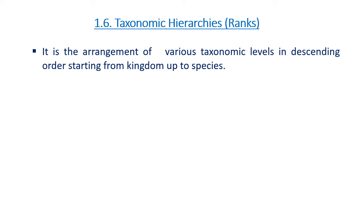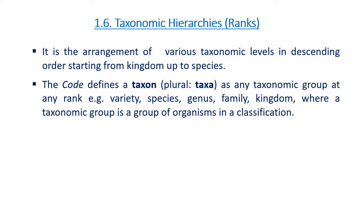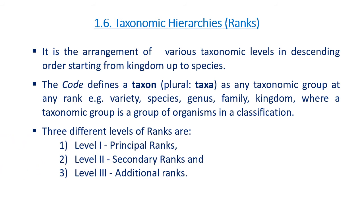Now the taxonomic hierarchies or taxonomic ranks used in classification systems. It is the arrangement of various taxonomic levels in descending order starting from kingdom down to species. The code defines a taxon as any taxonomic group at any rank — like variety, species, genus, family, or kingdom — where a taxonomic group is a group of organisms in a classification.